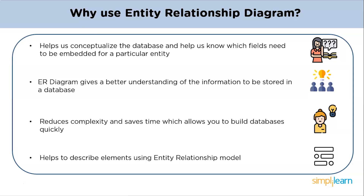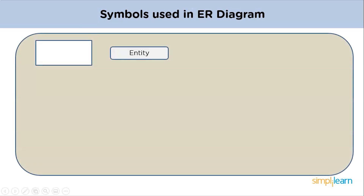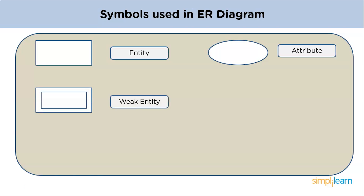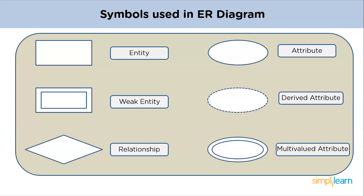Now you should get familiar with the symbols used in ER Diagrams. The rectangle symbol represents entities; an oval symbol represents attributes; a rectangle embedded in a rectangle represents a weak entity; a dashed oval represents a derived attribute; a diamond symbol represents a relationship among entities; and a double oval symbol represents multi-valued attributes.